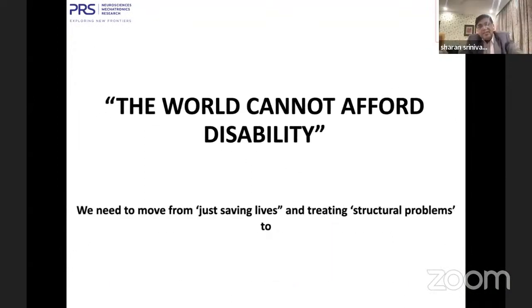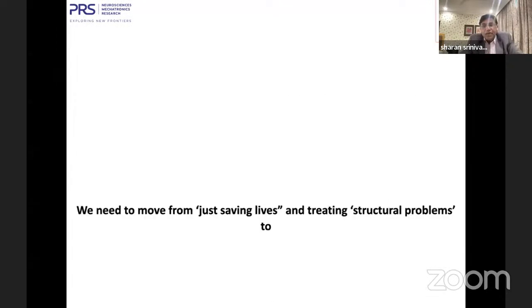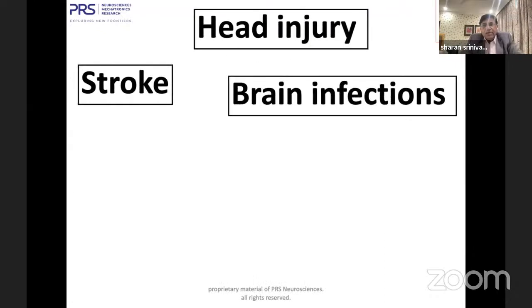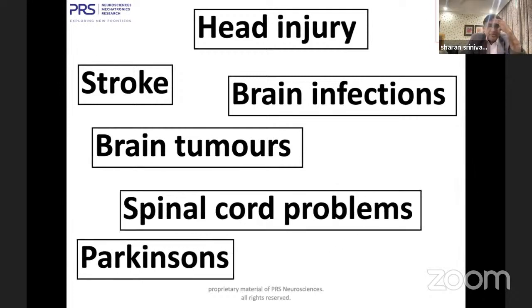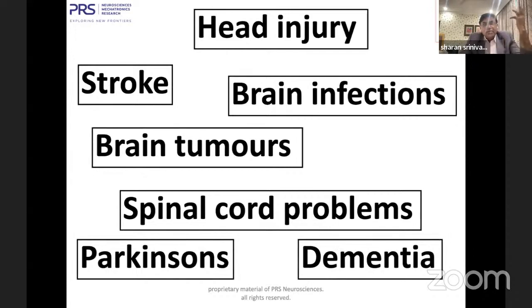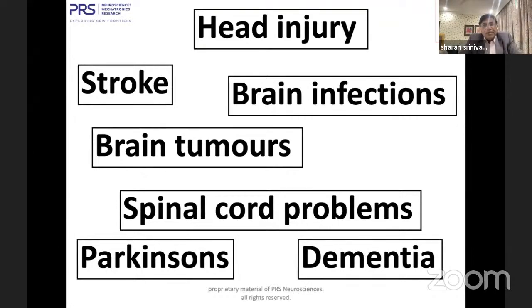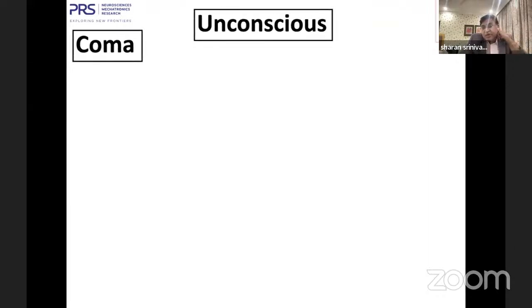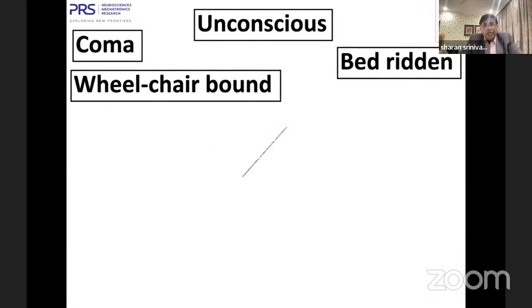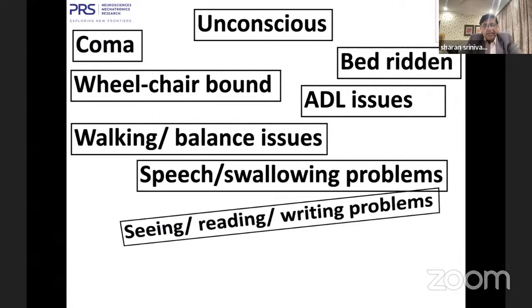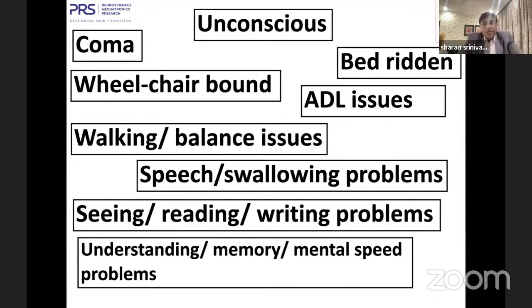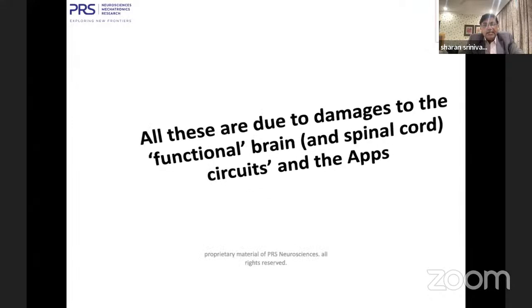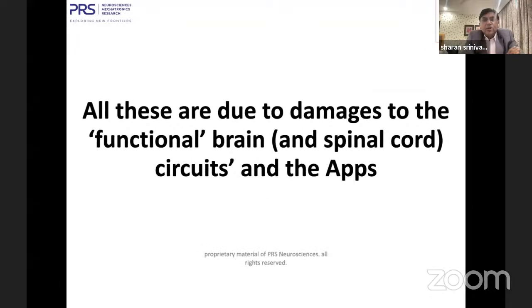The world cannot afford disability. We need to move from just saving lives through structure to actually giving patients a better quality of life. All of us know about stroke, head injuries, brain infections, spinal cord tumors, brain tumors, Parkinson's, spinal cord problems, dementia — the list is long for us as neuroscientists, both neurologists and neurosurgeons. Some patients are in coma, bedridden, wheelchair-bound, have walking and balance issues, ADL issues, tremor, swallowing, vision, reading, writing problems. So many different circuits in the brain are involved. Unfortunately, MRI scans do not show all these things. These are damaging the functional brain and spinal cord circuits.